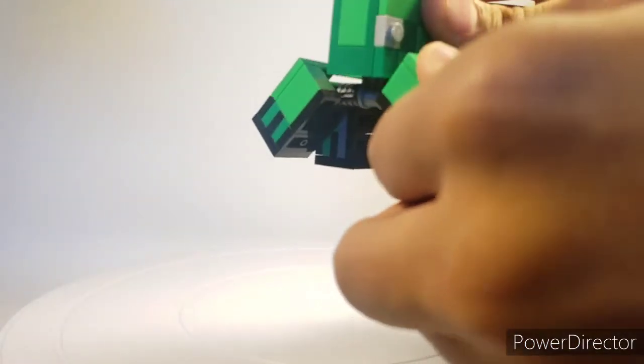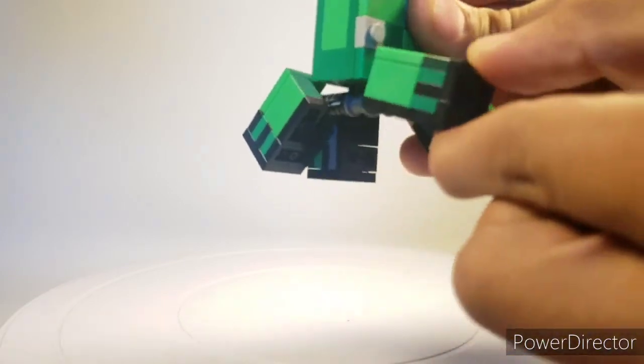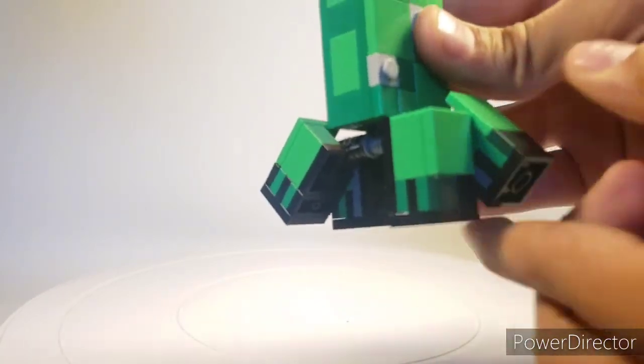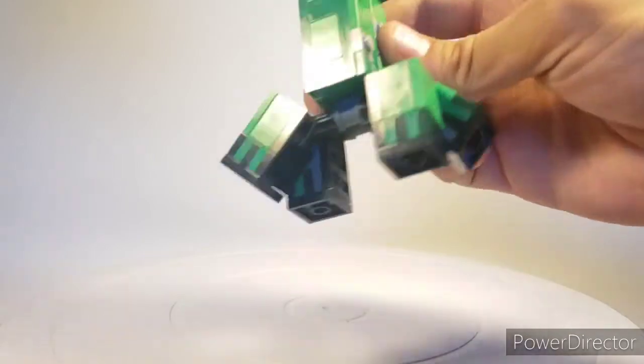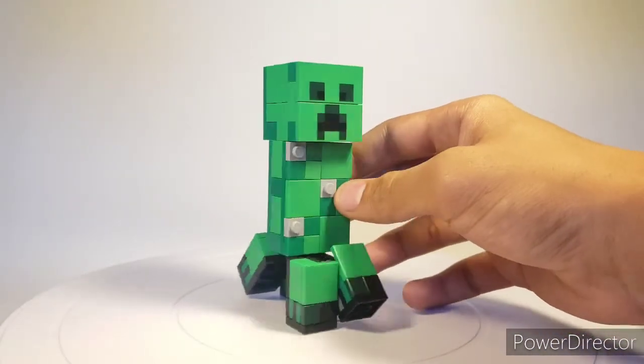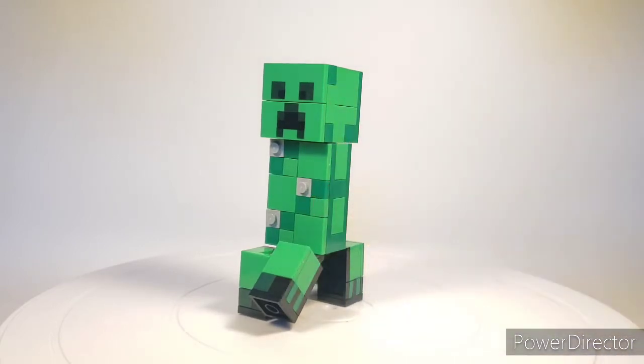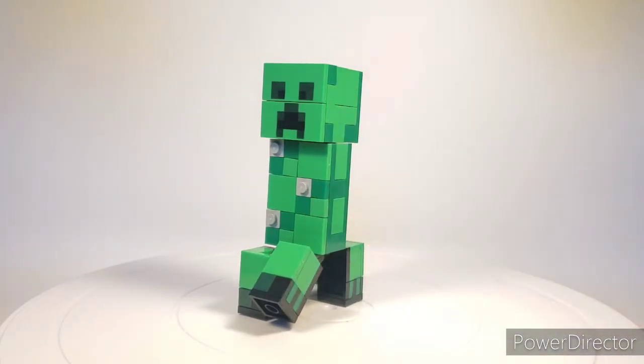As far as the legs go, they are on ratchet joints there, so you have articulation to pose this guy in a really nice walking pose as a creeper should look like from the actual game. Ratchet joints all around. That's pretty much it for the creeper as far as articulation-wise. Now we'll be moving on to the ocelot.